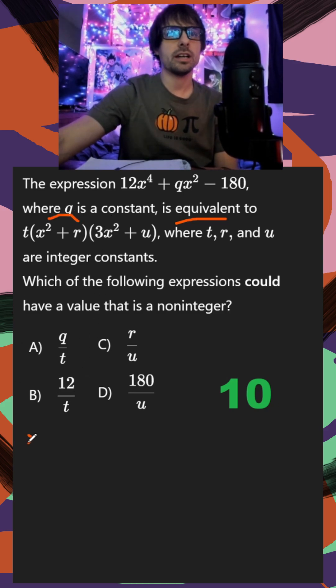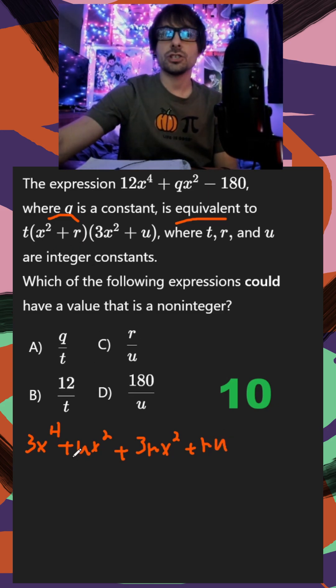So if I multiply my first one, I should get 3x to the fourth, and then plus ux squared, and then plus 3rx squared. And finally, r times u, so a little foiling, and then I just distribute my t.